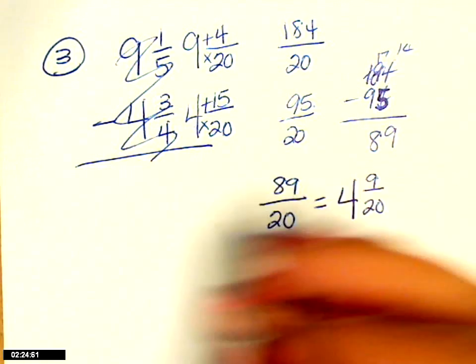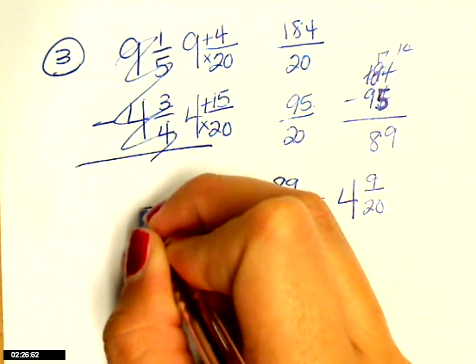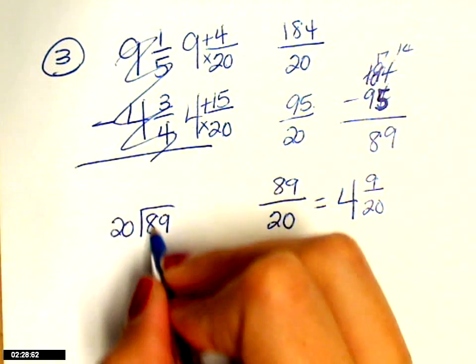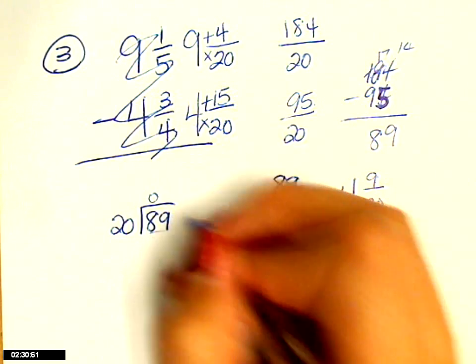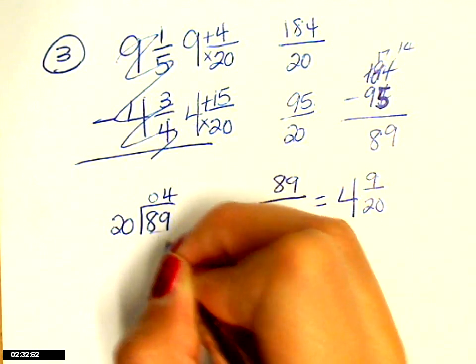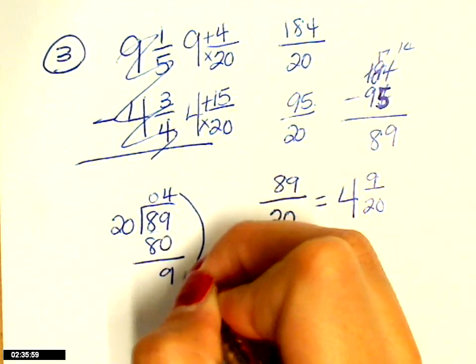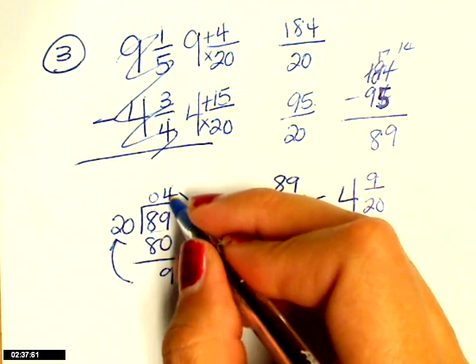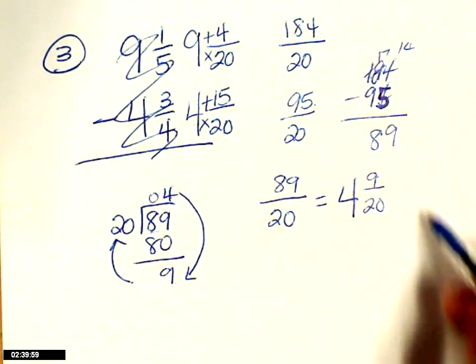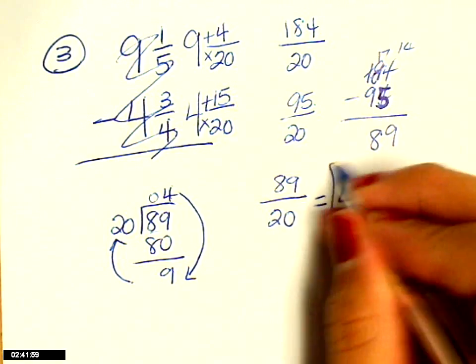Now, if you want to see that in actual long division, it looks like this. 20 into 8 is 0. 20 into 89 is 4. Subtract, and it works like this, clockwise. 4 and 9 20 is. Can we simplify this? No, this is my final answer.